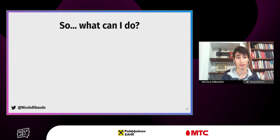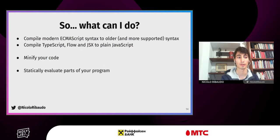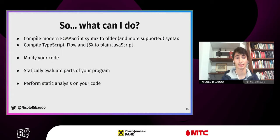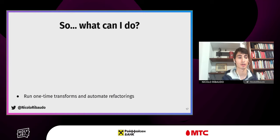Babel is a customizable JavaScript compiler. The obvious thing it does is compiling ECMAScript syntax to older syntax so it can work in older browsers, and it can compile TypeScript, Flow, and JSX to plain JavaScript. You could also try building a minifier, statically evaluate parts of your program using Babel macros, perform static analysis, or use it to run one-time transforms and automate refactorings — which is what I'm going to focus on now.